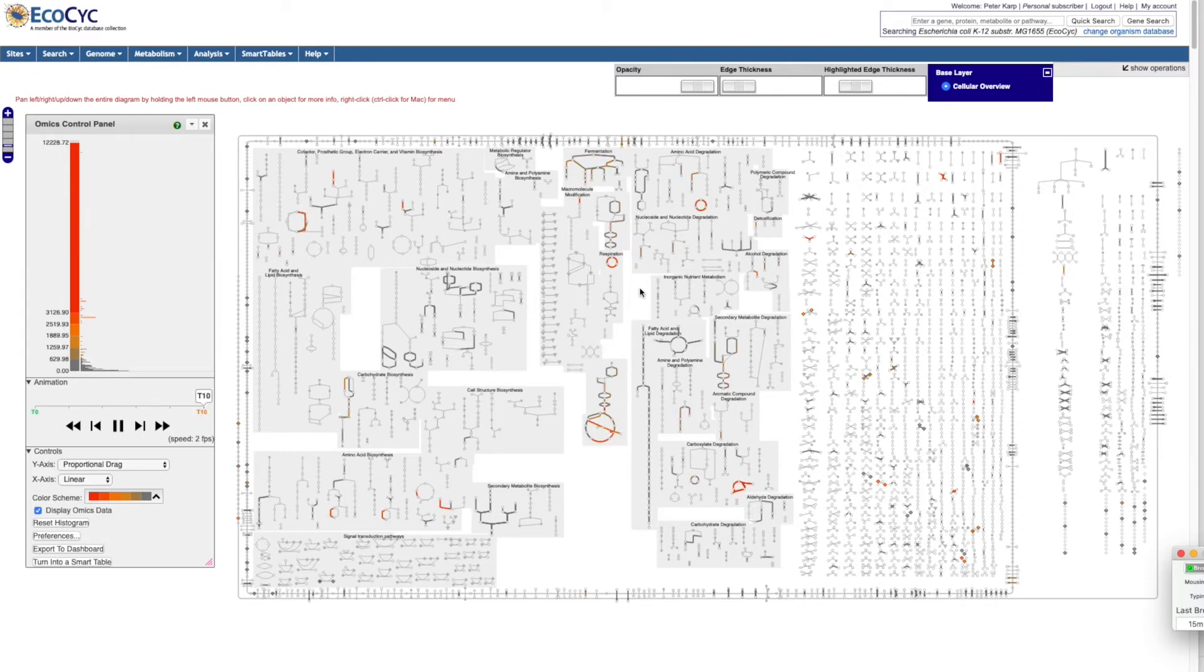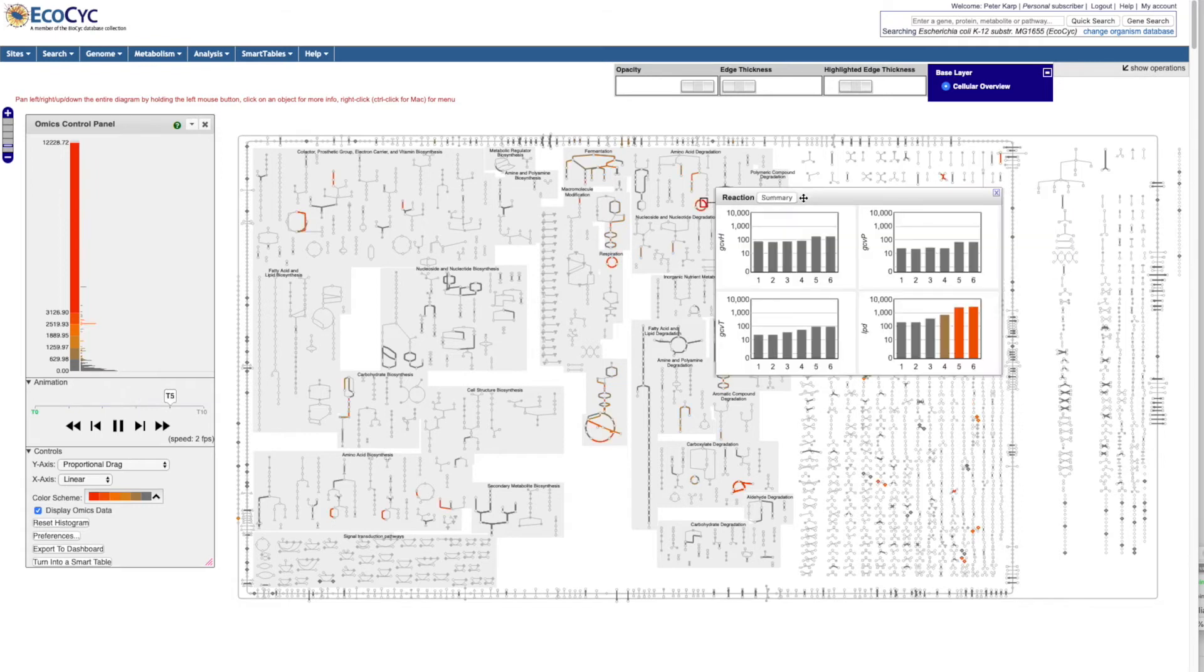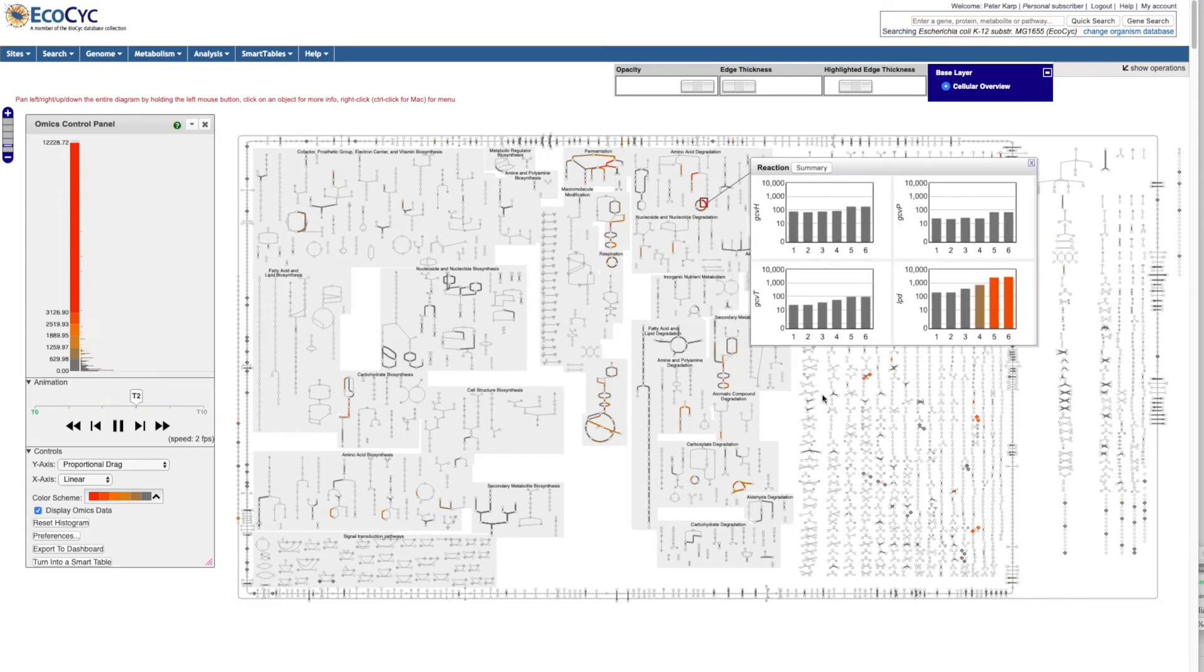And you may notice that this is an animated display in which we're watching the progression across six different time points during the shift from anaerobic to aerobic growth. And we can stop and start the animation, and we can display the expression levels of any gene or genes within the dataset.